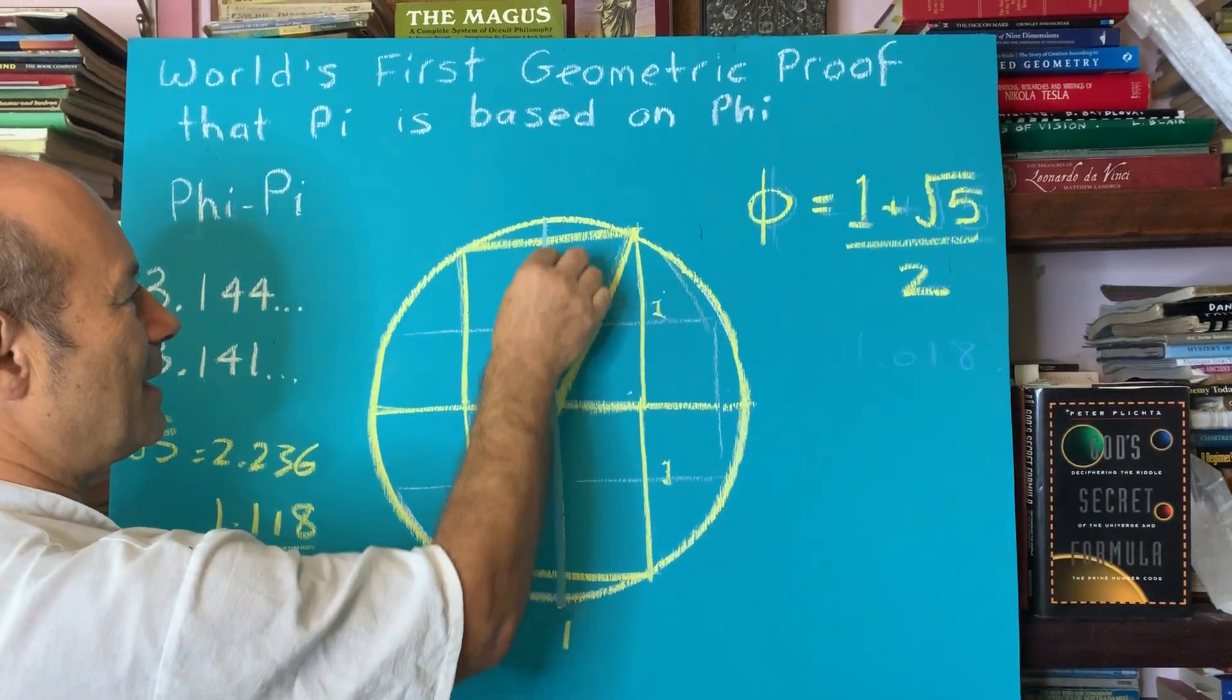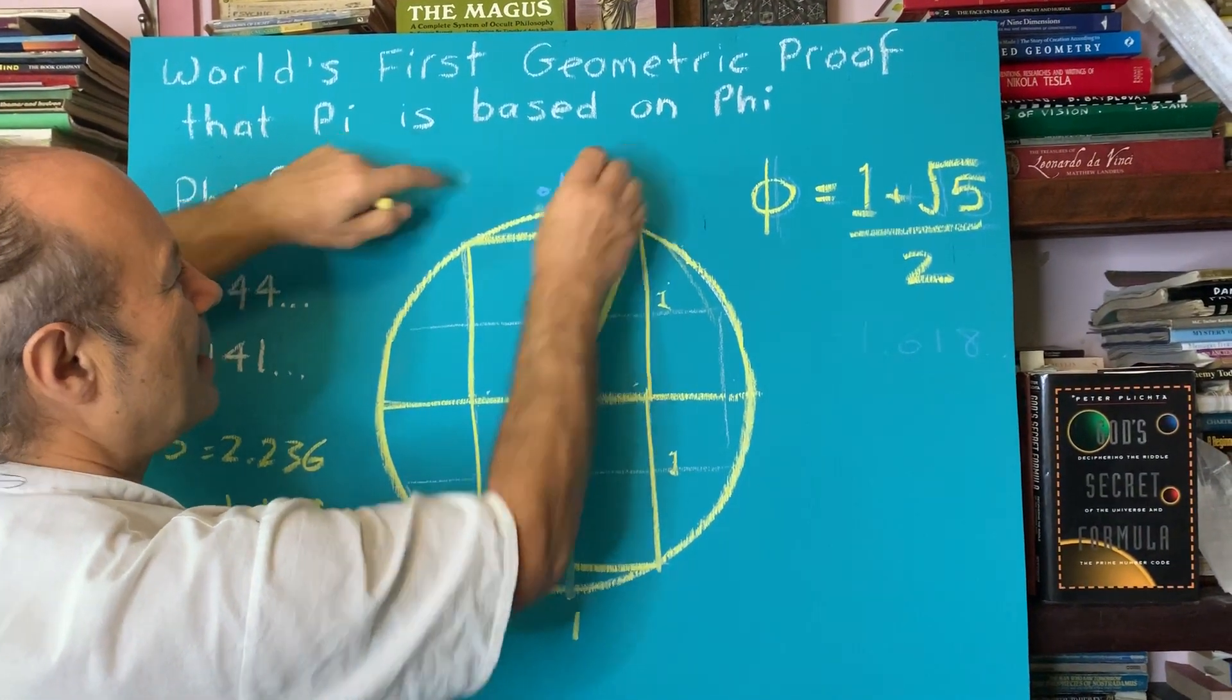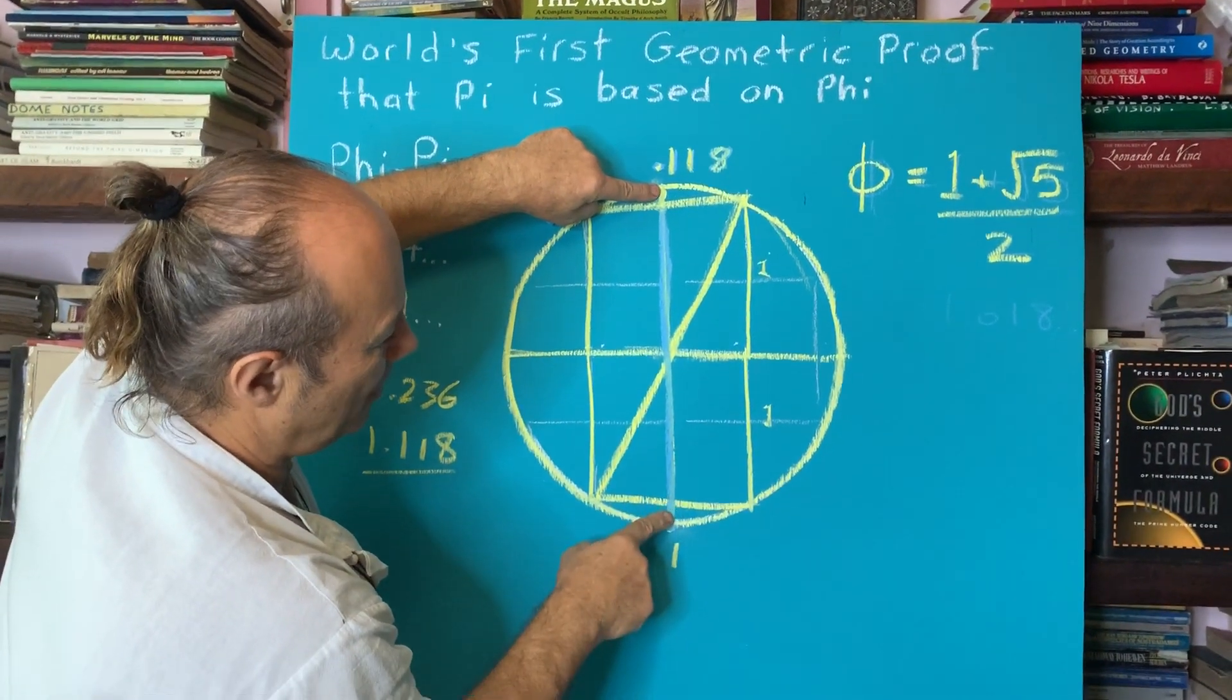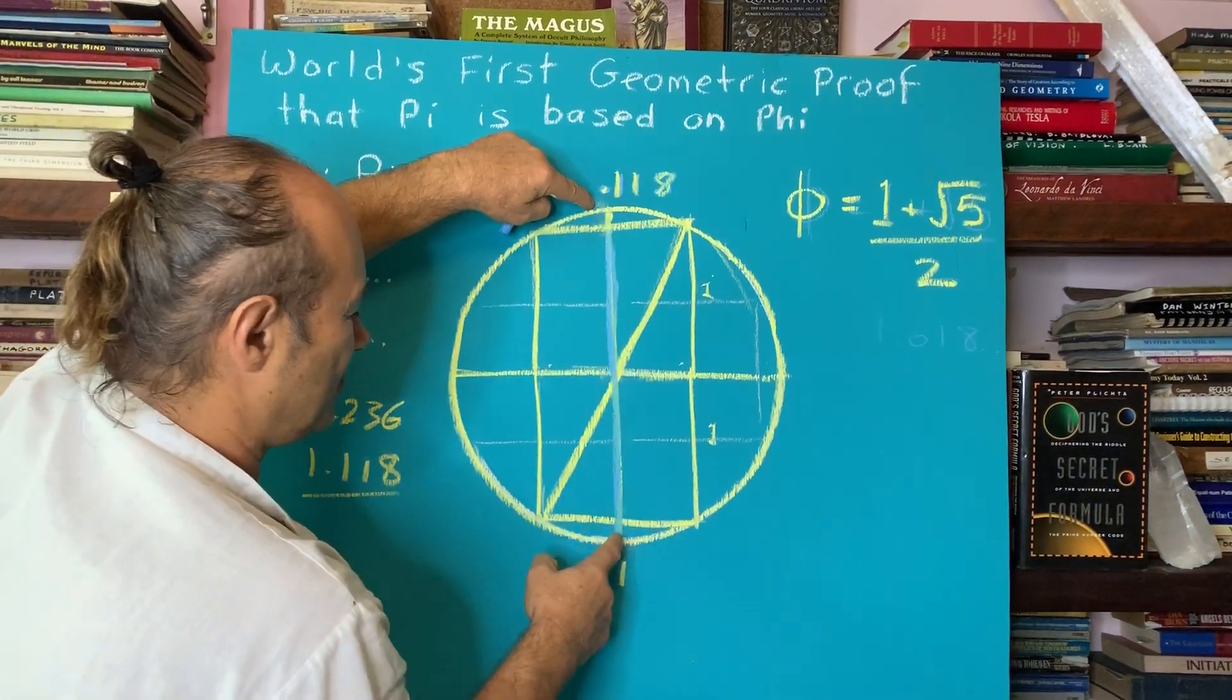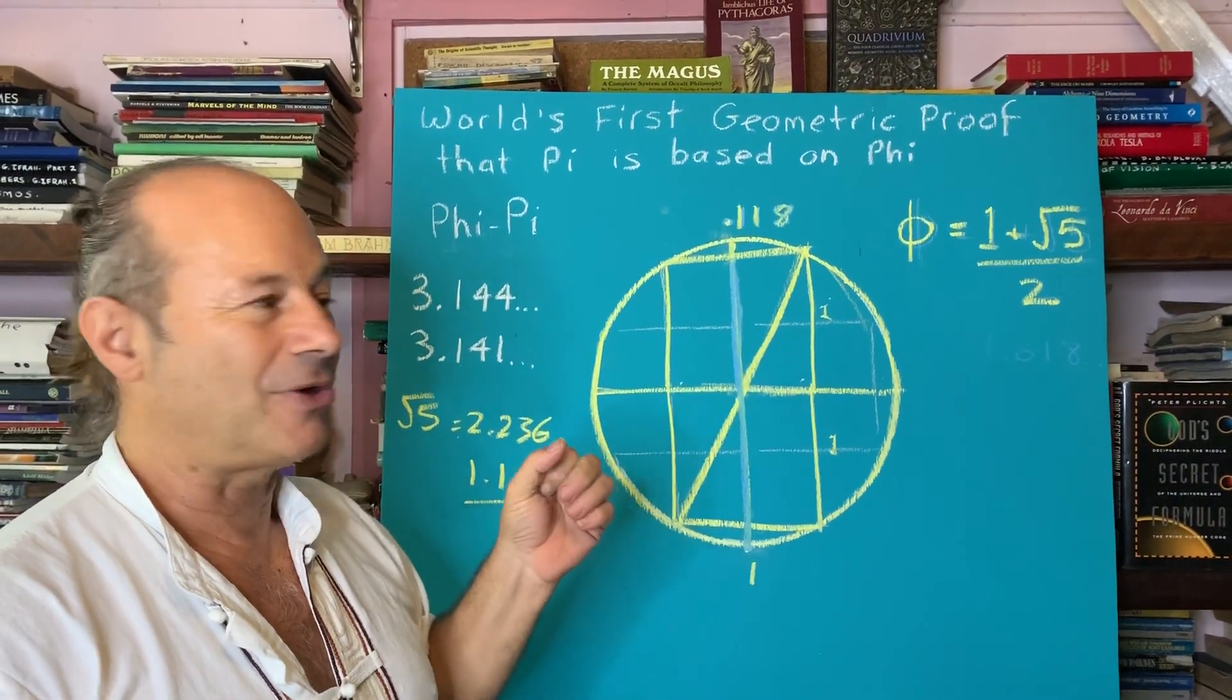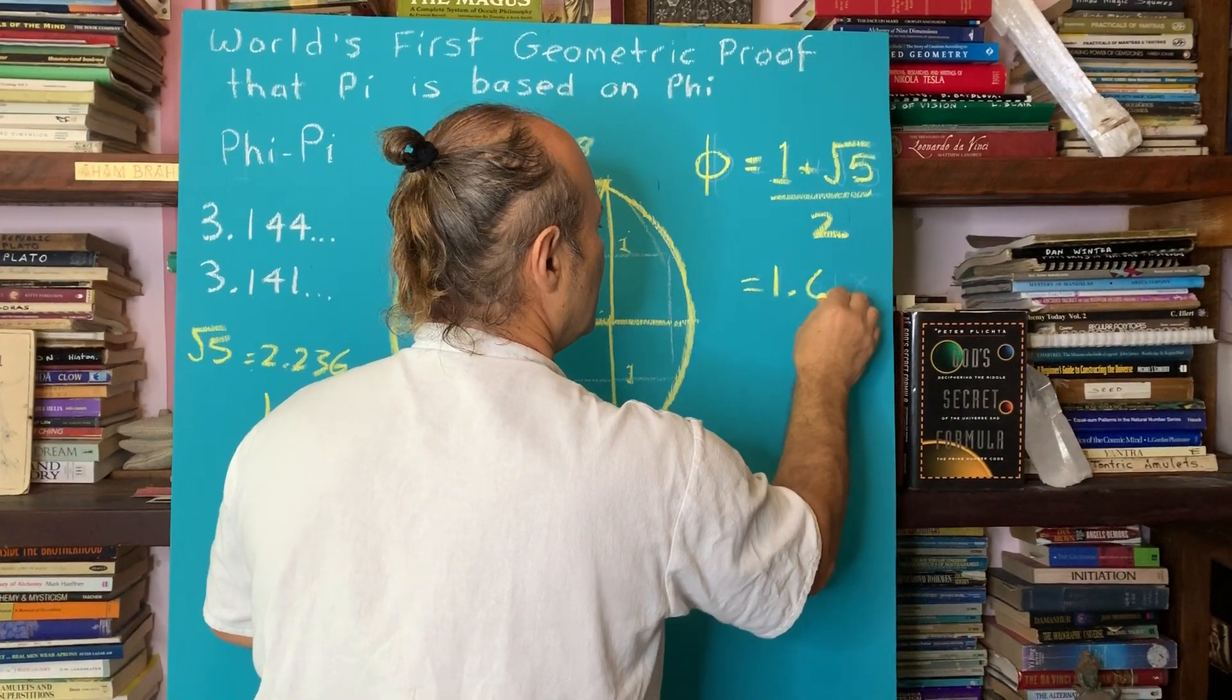And that's a critical harmonic because if this is root 5, this is also root 5 here, because the diameter is going right through from that point to that point. So if this is 1, the distance from the square to the curvature is called 0.118. And when we double, so 0.118 and 0.118 is 0.236 plus the 1 and the 1 is 2. So this distance is root 5, 2.236.